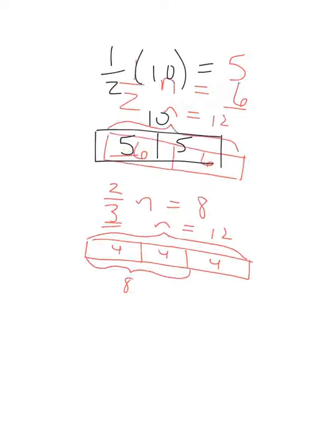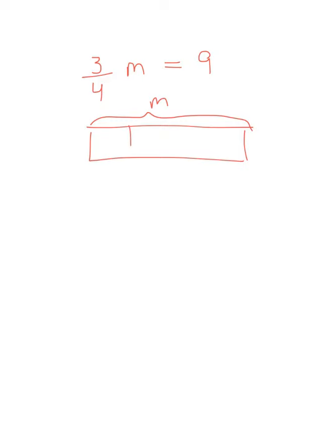So get it another way. If you had 3 fourths of m, so let's say we don't know what m is, so 3 fourths of it, though we know is equal to 9. Well, again, the whole bar, 3 fourths of m, so the whole bar is m, 3 parts of it is 9. So if 3 parts was 9, wouldn't each bar be 3? So then m must be 12.